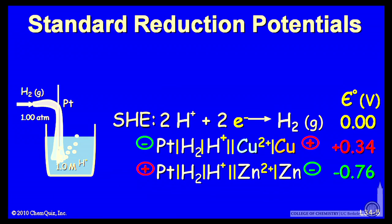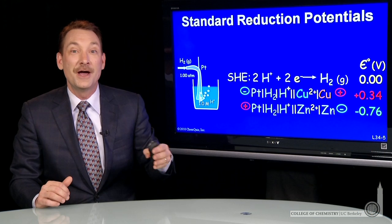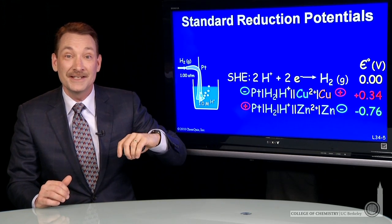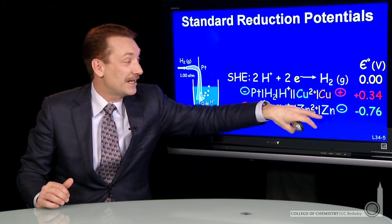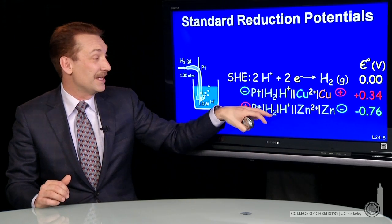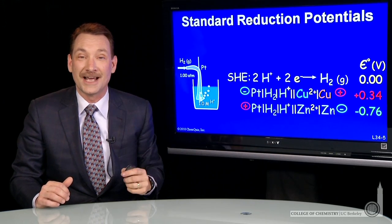If we set up that hydrogen standard electrode with a zinc metal zinc electrode, we'll have a potential of minus 0.76 volts. So the opposite potential - electrons flow in the opposite direction in this case, so the zinc ion zinc metal electrode has a lower potential than the hydrogen ion hydrogen gas electrode.